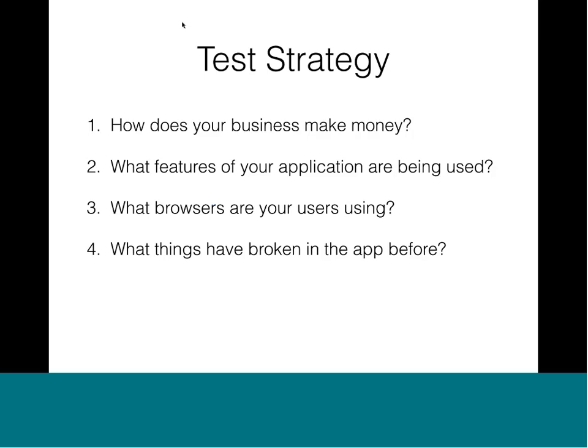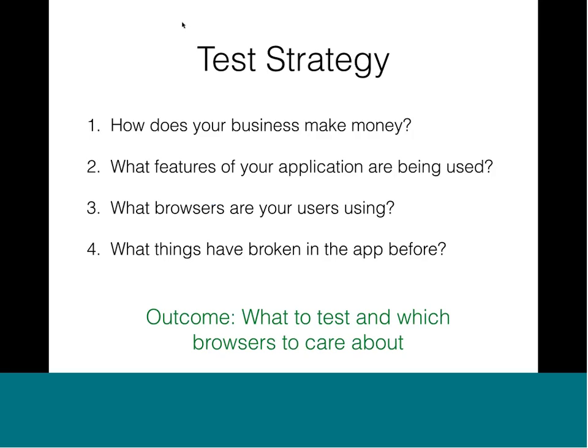Basically, you want to get the answers to these questions and then create a simple backlog of things to test. These questions distill down to the outcome: what to test and which browsers to care about. A lot of organizations just want to automate everything — that's not a worthwhile pursuit. Instead, focusing on the crucial components of the business and what is actually being used will help filter things down to what's important.